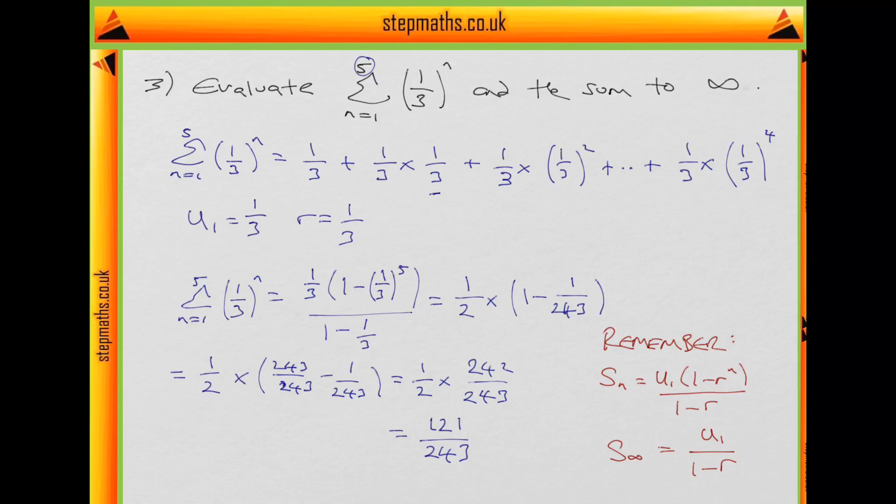Now, for the next part of the question, we could simply use our formula down here for the sum to infinity. But it might be helpful to think about why this is what it is. So, a geometric sequence will only converge if our ratio is strictly less than 1. More specifically, if the modulus of our ratio is less than 1.